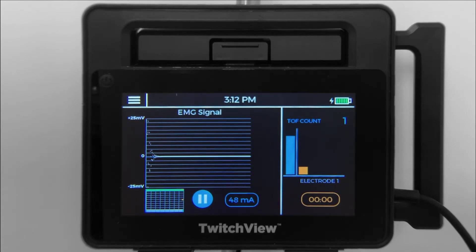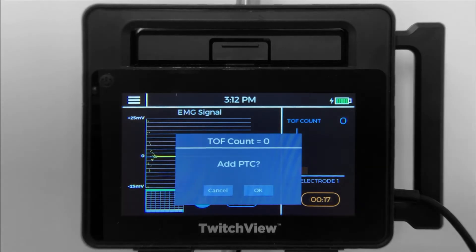If OK is selected, the system will automatically transition between TRAIN-4 and post-tetanic count modes according to the patient's level of paralysis for the duration of the case. If CANCEL is selected, the monitor will remain in TRAIN-4 mode.